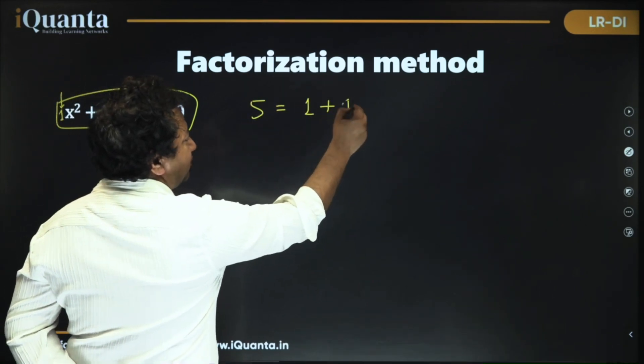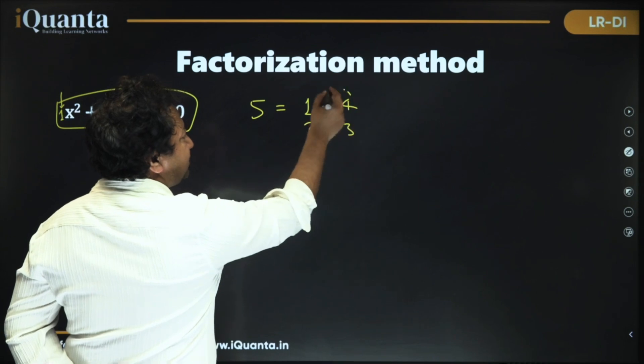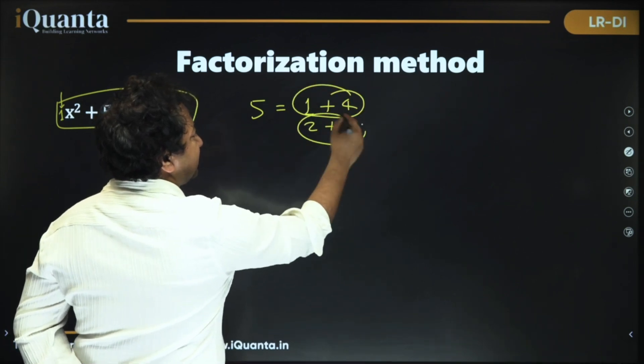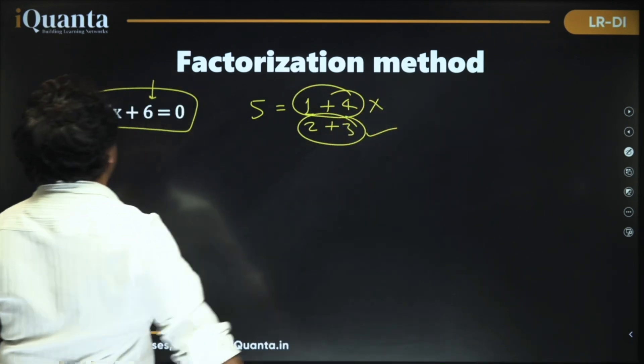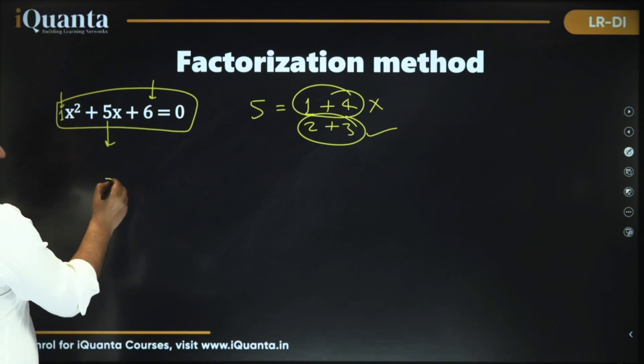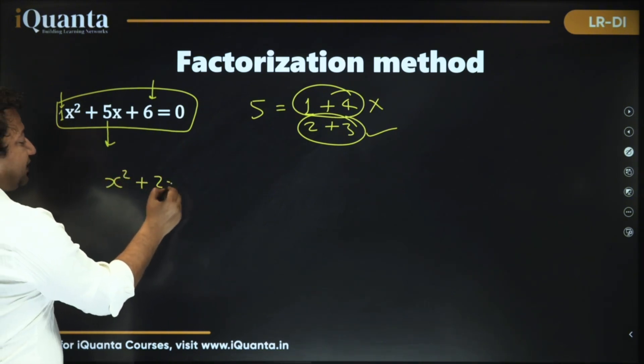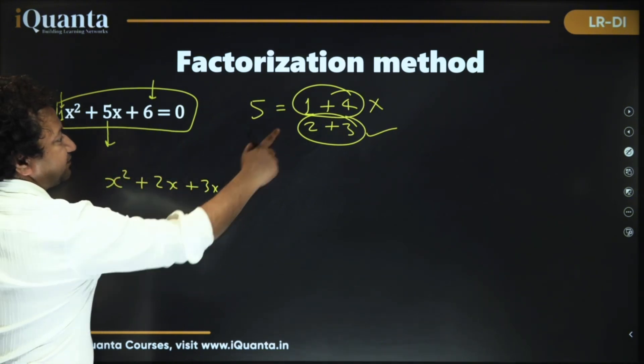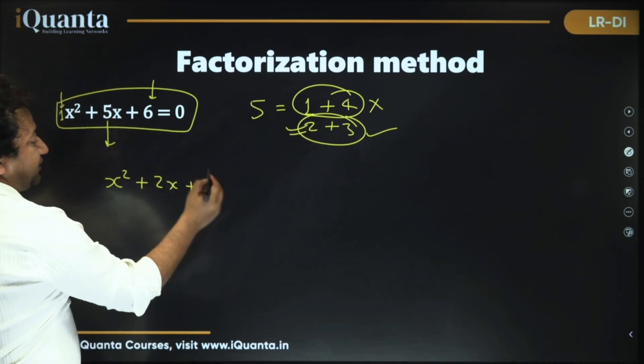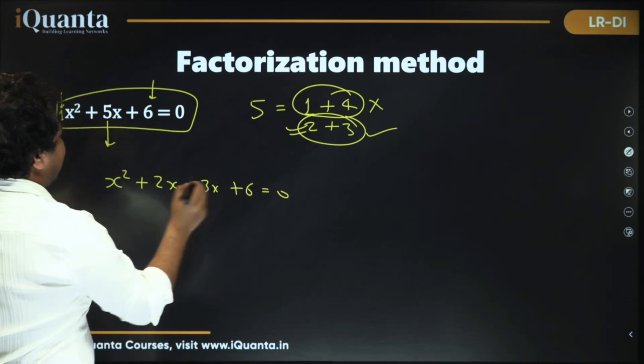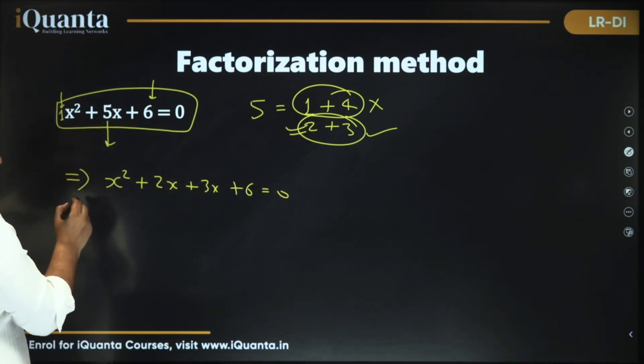It can be 1 + 4, 2 + 3. 1 + 4 the product is 4. Here it is 6. So this is our choice not this one. Great. What to do now? I just break 5x as 2x + 3x. This is chosen. And then we have + 6 here. So I have rewritten the equation in this form.